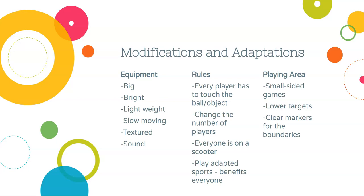More texture means more surface area for students to grip the equipment, so rather than letting a ball slip through their hands, they can grasp on. Equipment with holes in it is also very helpful — imagine a soccer ball with just the outlines and no spots filled in. Students can grab with a finger, getting into one of those little loops in the ball to catch.